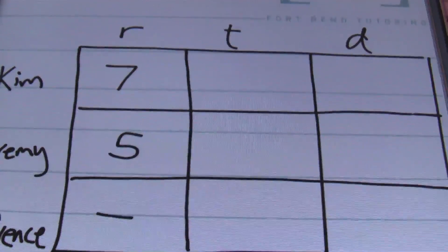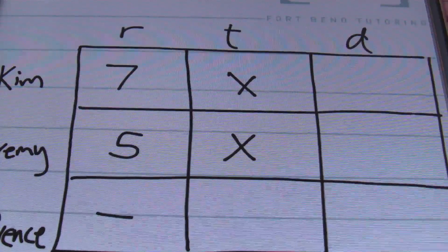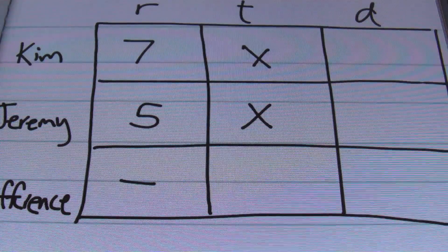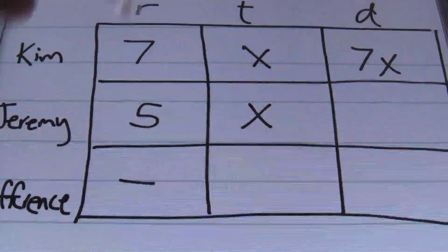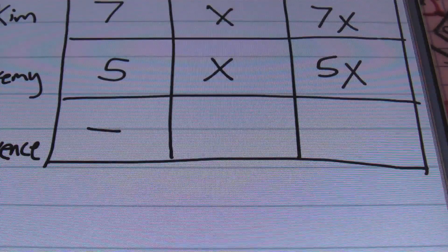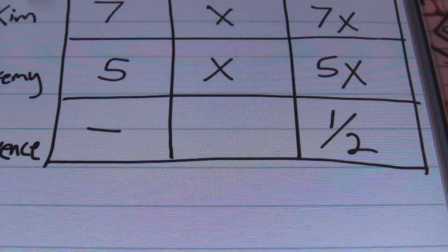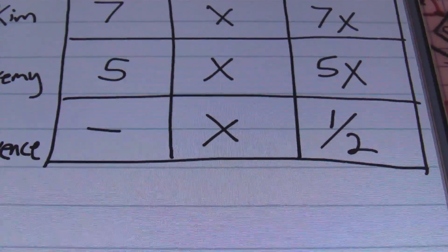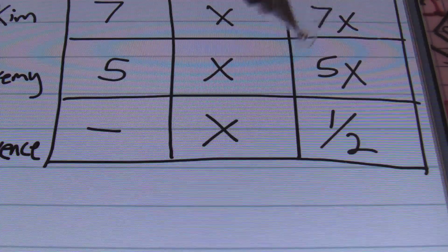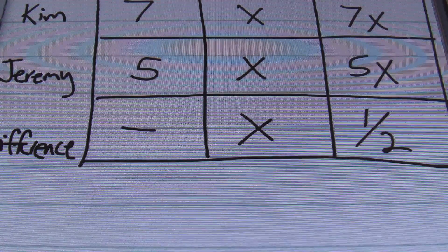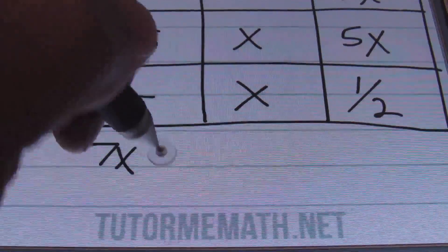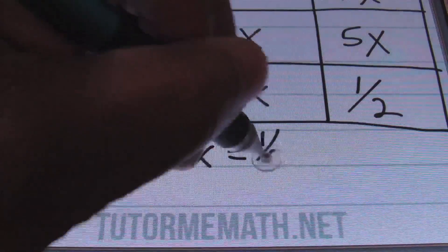Next, we'll look at the length of time. They started running at the same time, so we can use the same variable X for the length of time they're running. Multiplying 7 times X gives us 7X for Kim's distance, and 5 times X gives us 5X for Jeremy's distance. I want the difference in distance to equal one half of a mile. So the equation from the last column will be 7X minus 5X equals one half.